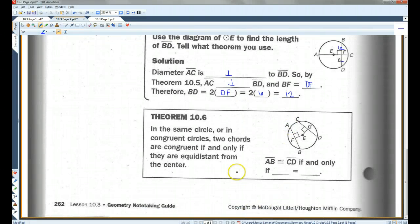Alright, 10.6. In the same circle or congruent circles, two chords are congruent if and only if they are equidistant from the center. So AB is congruent to CD if and only if EF equals EG.